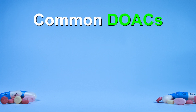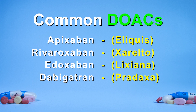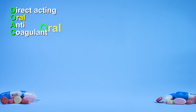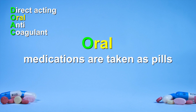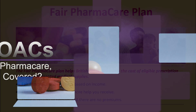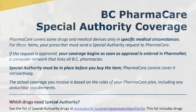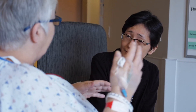The common or generic names for the DOACs are shown here. You may also know your medication by its brand name, shown here in brackets. Oral means that they are taken as pills. If you are dependent upon Fair Pharmacare for income-based drug coverage, your prescriber or pharmacist must submit a special form to Pharmacare to request coverage. Without coverage, out-of-pocket costs for DOAC prescriptions can be more expensive than other anticoagulants like Warfarin. Speak to your prescriber, pharmacist, or a social worker if you have concerns about medication costs.